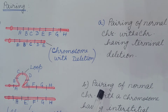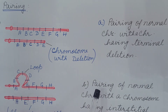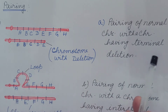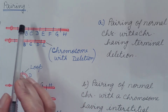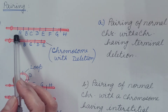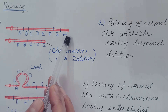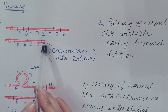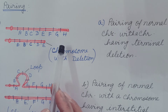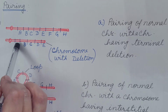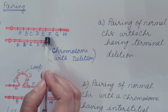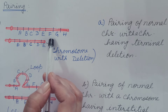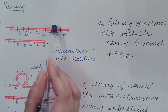During meiosis, pairing of homologous chromosomes takes place. When a chromosome with deletion pairs with its normal non-deleted homolog, in the case of terminal deletion, the normal chromosome has genes A through H, and the deleted chromosome has its terminal end deleted. So genes A to E pair normally, but F, G, H do not have a counterpart in the deleted homolog; hence, these remain unpaired.